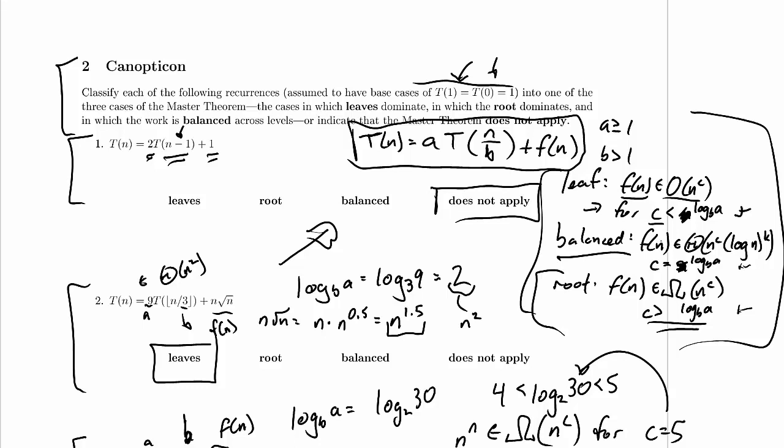In the balanced case, f(n) is in theta of n to the c, plus these log factors, which are usually not going to be relevant to us and they aren't here. In this case what matters is c is log base b of a, remember that's just 0.